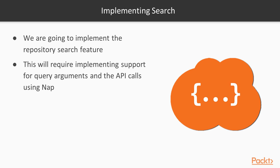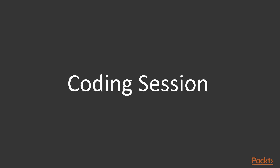Designing the CLI search feature. In this section, we're going to implement the repository search feature. This will require implementing support for query arguments and the API calls using NAP. We're going to build on top of the previous library that we wrote, NAP, and we're also going to need to make some adjustments to the NAP library for it to support query arguments. Query arguments are going to be used especially for the search API to pass query parameters. Let's get coding.